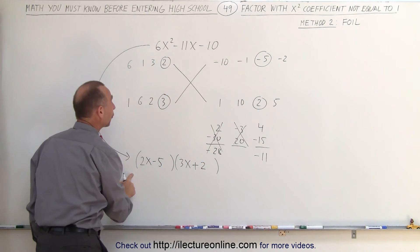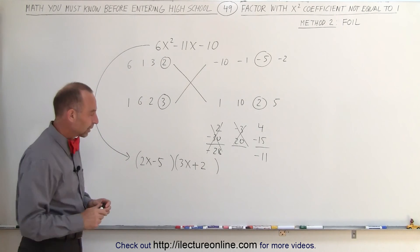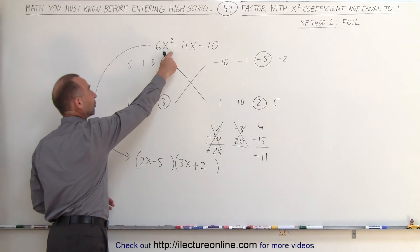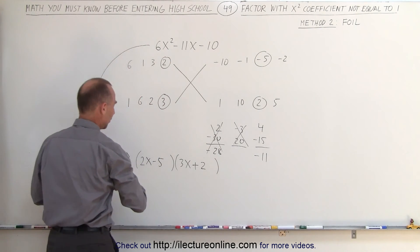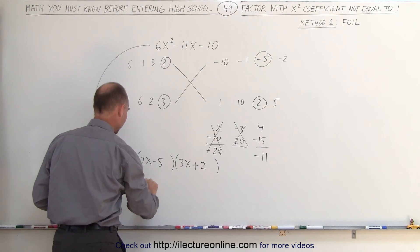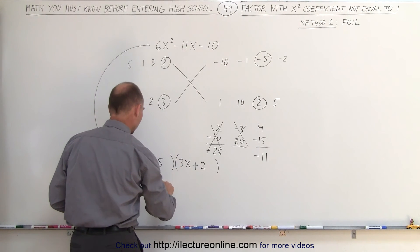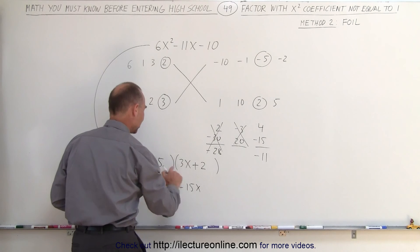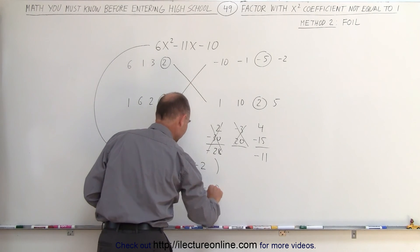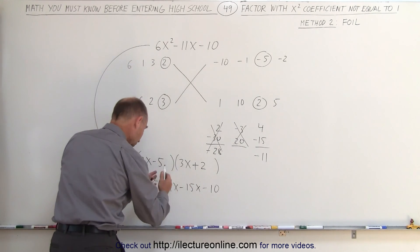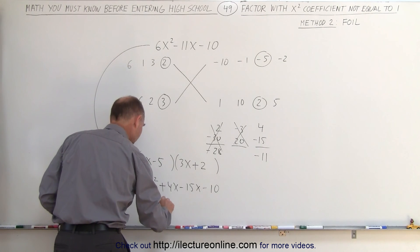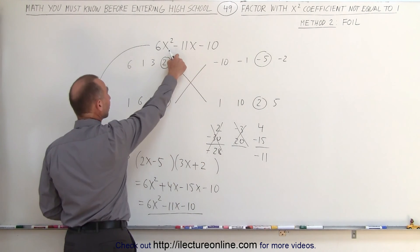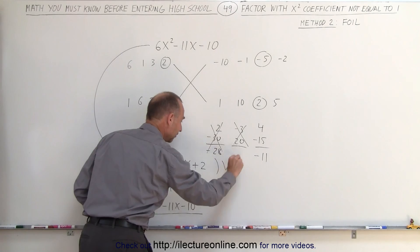So now I have the factored form of my original problem. To make sure this is the correct answer, we can check by multiplying everything together again to see if we get the original problem back. We multiply 2x times 3x, which is 6x squared, 2x times 2, which is plus 4x, minus 5 times 3x is minus 15x, and minus 5 times 2 is minus 10. When I add the common terms together, this equals 6x squared minus 11x minus 10, which is the same as the original problem — meaning I found the correct answer.